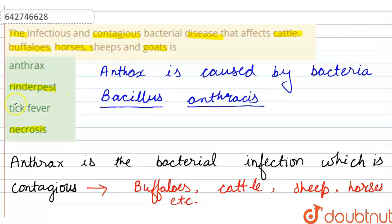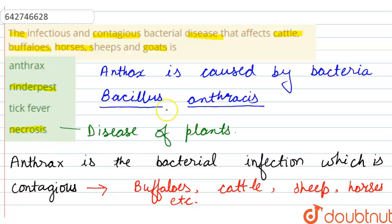Rinderpest is not a bacterial disease. Tick fever is not a disease of buffaloes, horses, and goats because it is found in humans. Necrosis is a disease of plants. So the correct option will be anthrax.